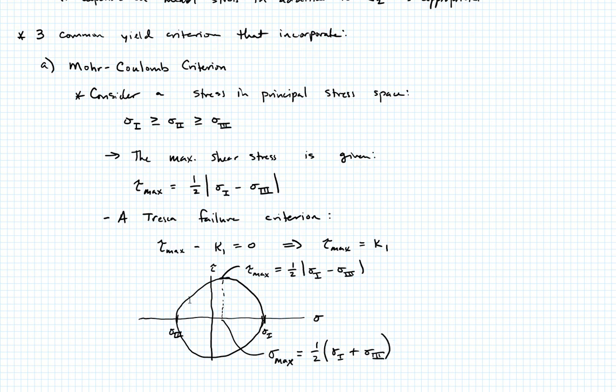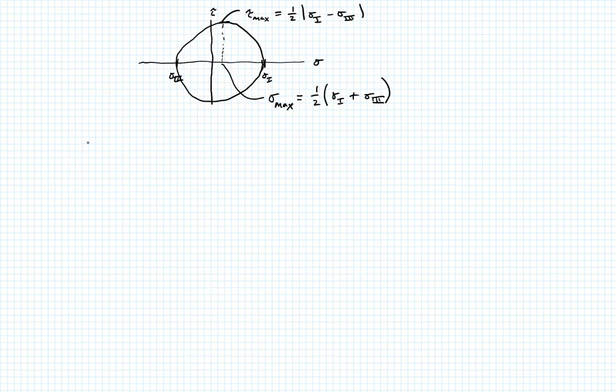So I want to incorporate that into a failure theory. What I can do to incorporate sigma max is say, well, I have tau max equal to K1, that's the Tresca criterion, but I want this value to be reduced. I want the critical value that I have to achieve to be reduced whenever I have a tensile loading on that plane. So how about I say minus some coefficient mu times sigma max. If sigma max is positive, that's tension, then I reduce the critical value required to cause yielding. If sigma max is negative, then I'm in compression and I actually add to it. So I'm going to now get a tension-compression asymmetry.